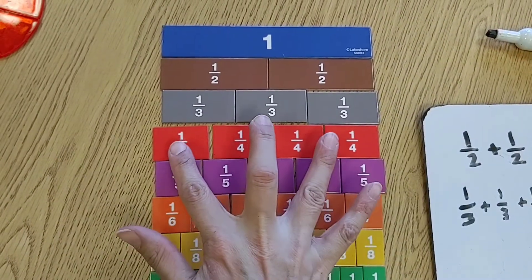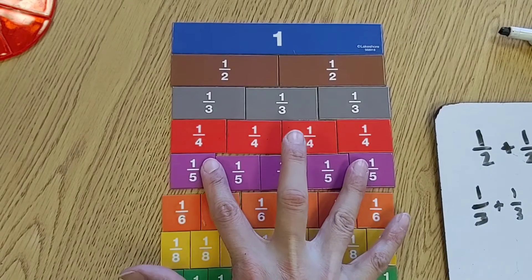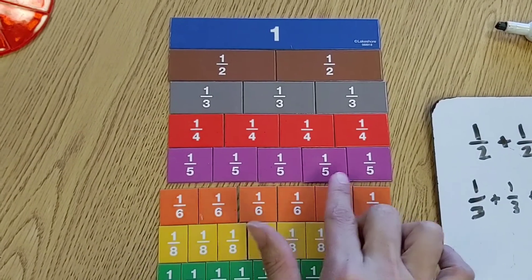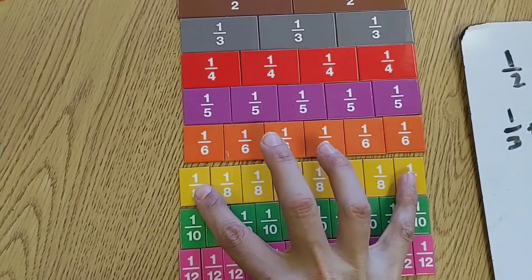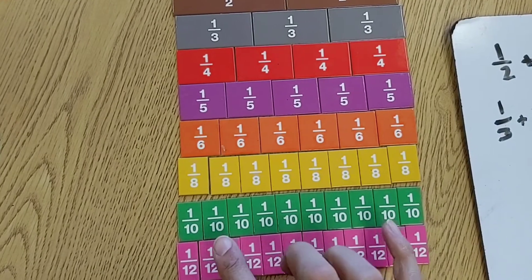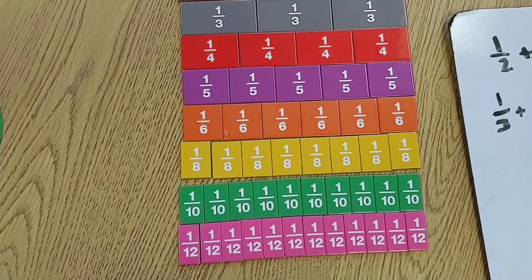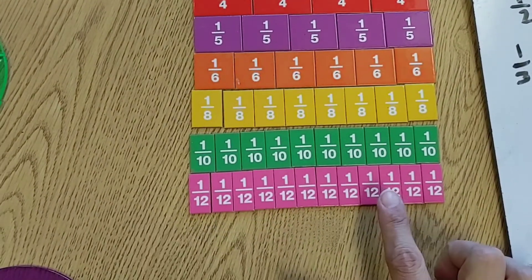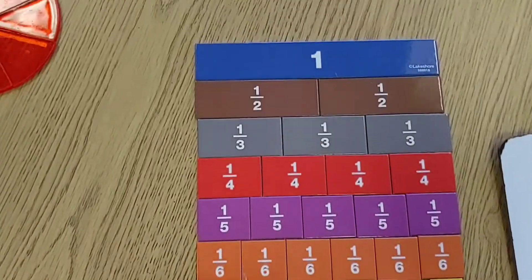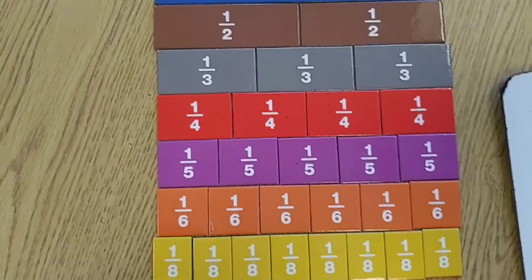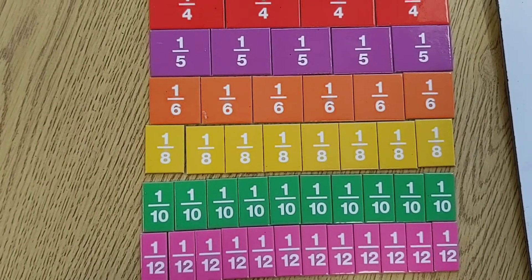Now if we were to take that whole and divide it up into fourths, that gives us four pieces. So fifths, that would give us five pieces. Six, we've got six pieces. These are eighths. We would need eight of those. These are called tenths. There's ten of them. And then these are twelfths. You need twelve of those. So this shows you what would happen if I take my whole and break it up into the different fractions. Whatever that bottom number is, I would need that many of them to equal one whole.